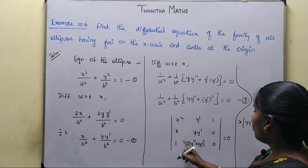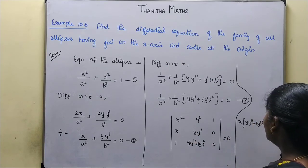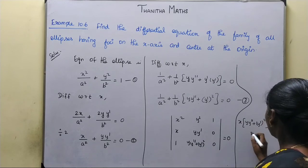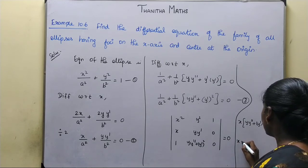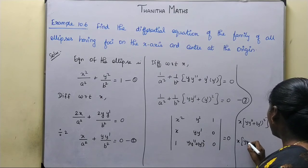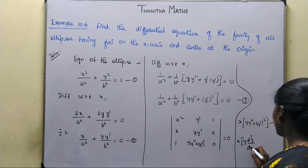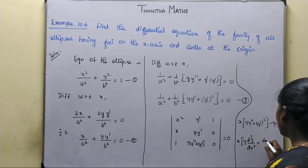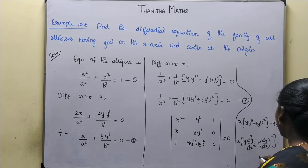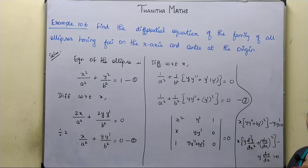So the required differential equation is: x times (y times d²y/dx² plus (dy/dx)²) minus y times dy/dx equal to 0.